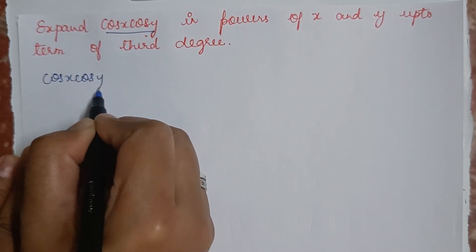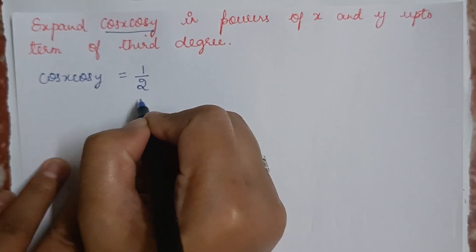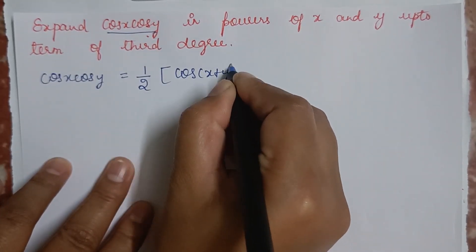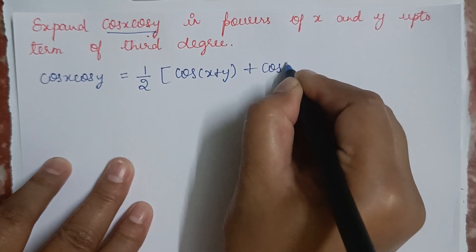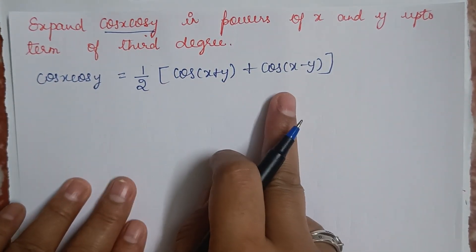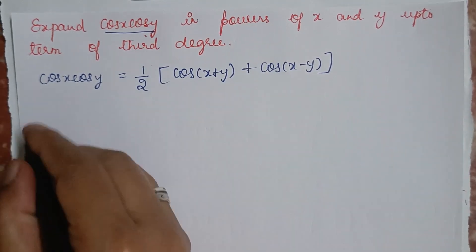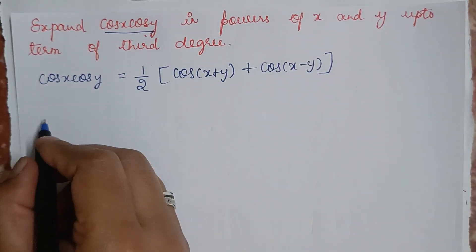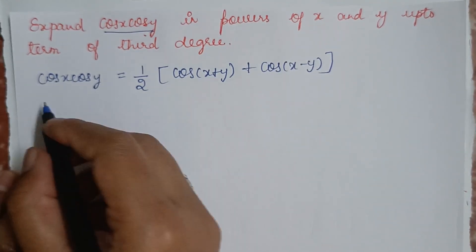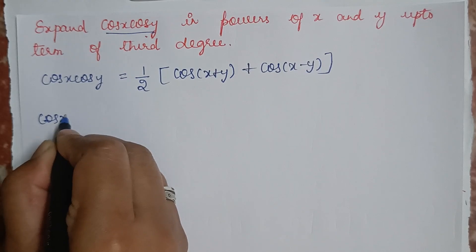The function given is cos x · cos y. This can also be written as ½[cos(x+y) + cos(x−y)]. Using this identity, I can expand the two cosine functions individually using Taylor's series expansion.